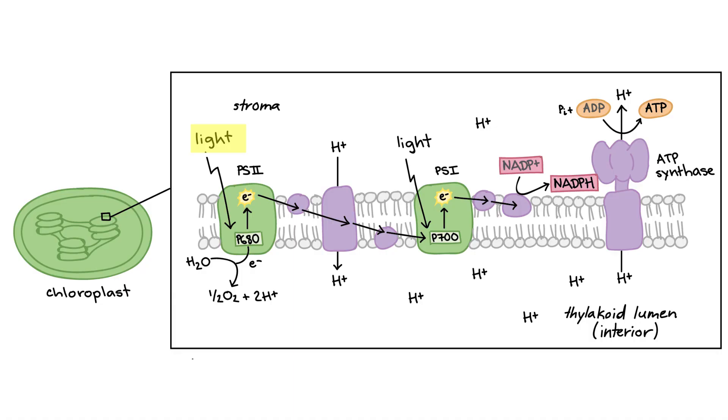Light excites the electrons in P680, which is photosystem II's primary donor. Photosystem II is a protein complex in the thylakoid membrane. Once the electrons in P680 are excited, they leave P680, leaving P680 with no electron.